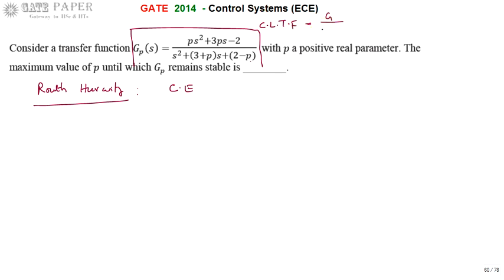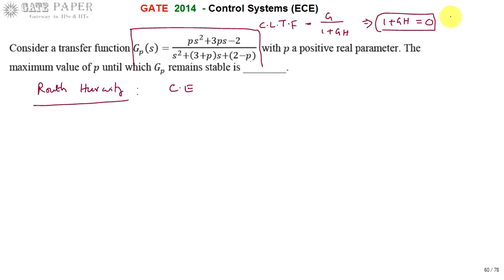The general closed-loop transfer function equation is 1 divided by (1 + GH). The denominator part of the closed-loop transfer function, when equated to 0, becomes the characteristic equation. So 1 + GH = 0 is treated as the characteristic equation of the given system. For the given system, the characteristic equation is: s² + (3 + p)s + (2 − p) = 0.